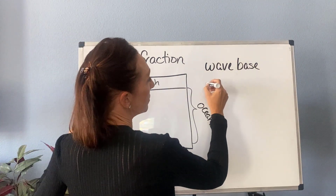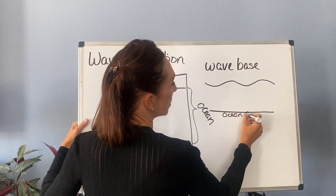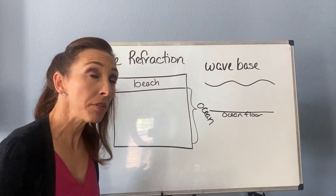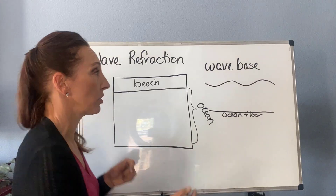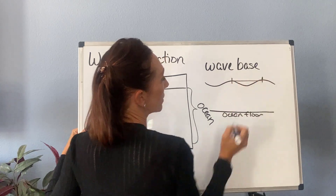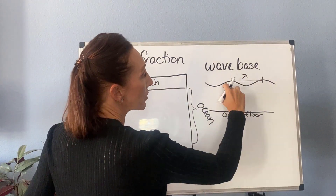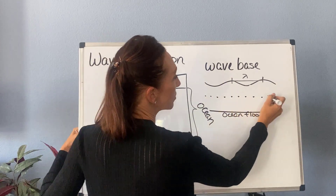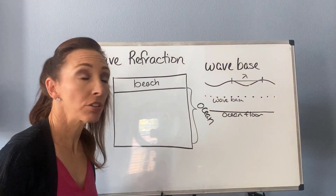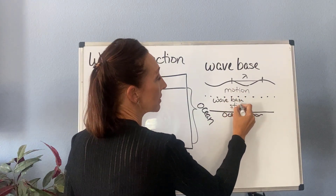If we look at a wave — here's the top of my wave and here's the ocean floor — let's say it's traveling from left to right. There is a depth at which the wave is no longer affecting the water, and it ends up being half of the wavelength. So if my wavelength is crest to crest — that's lambda — I go halfway down, and half of that distance is right here: this is my wave base.